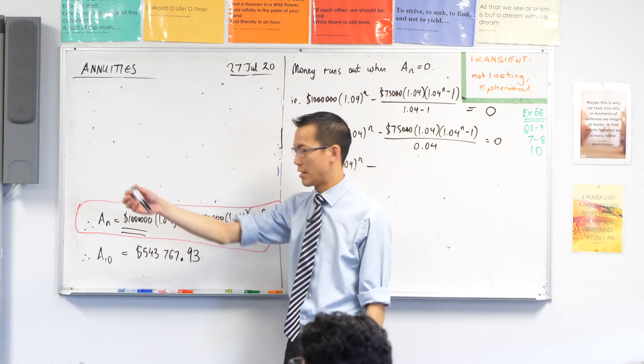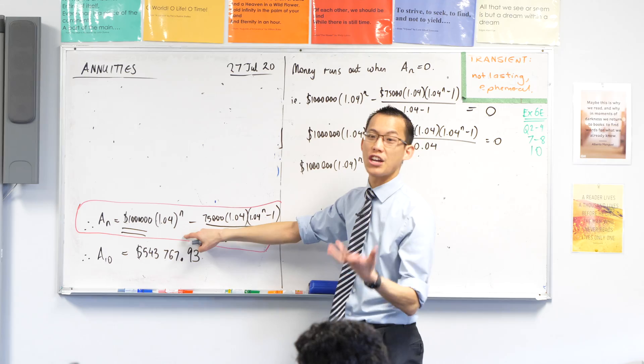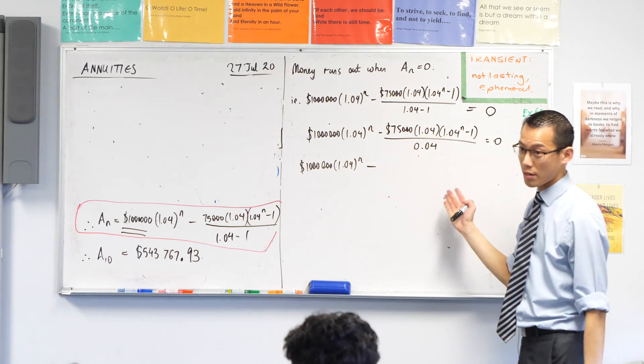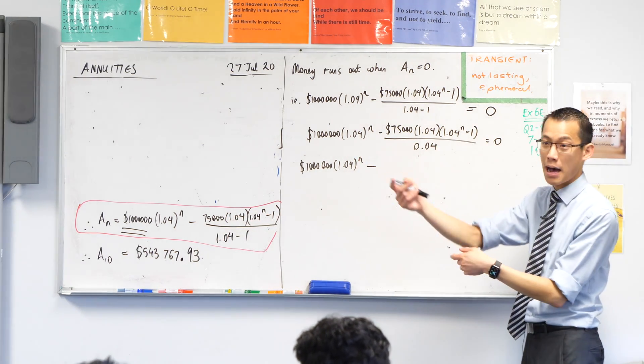As you can see in part a, the reason why I went to n, what we call the general case, is because you can use it for every other question you ever need to get asked, like part b.